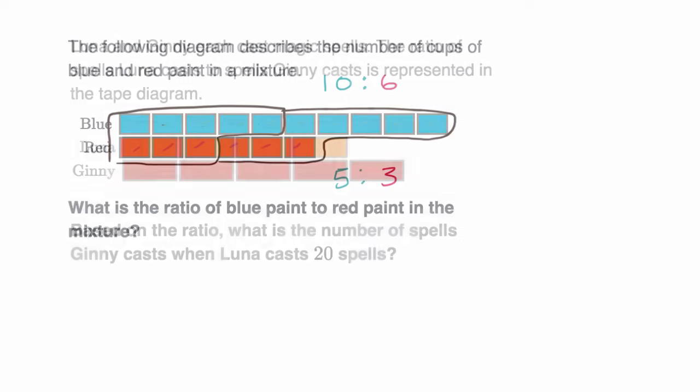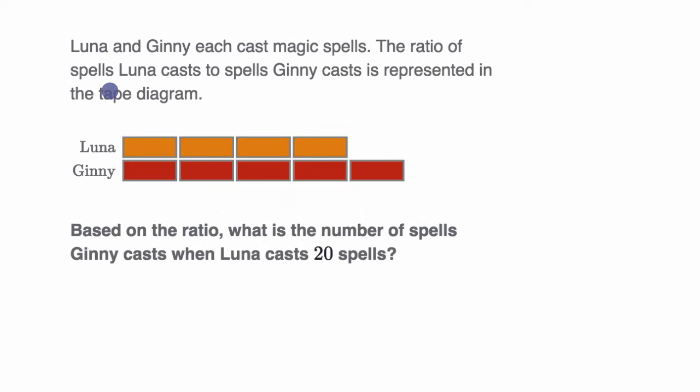Let's do another example. Here we're told Luna and Ginny each cast magic spells. The ratio of spells Luna casts to spells Ginny casts is represented in this tape diagram. Based on the ratio, what is the number of spells Ginny casts when Luna casts 20 spells? Pause this video to see if you can work it out.